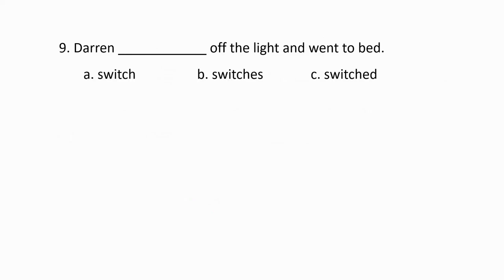Question number nine. Answer: Darren switched off the light and went to bed. The answer is letter C, 'switched off the light and went to bed.' Switch → switched is a regular verb, we add only -ed. And 'went' is the past tense of 'go.'